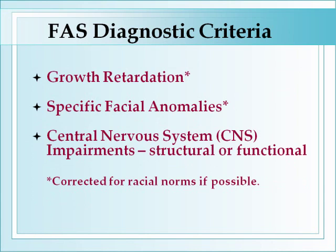To establish a diagnosis of fetal alcohol syndrome, we look at three criteria: growth impairment, a specific set of facial characteristics, and central nervous system impairments. These can be structural, as might be seen on an MRI scan, or functional problems, which are more common and more problematic for most individuals and families. Whenever possible, we try to correct for the individual's family or racial background, though there is some controversy about this in the genetics community.